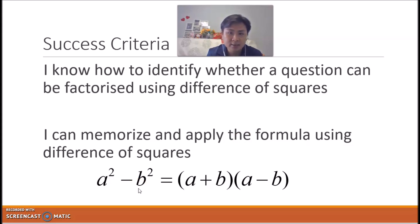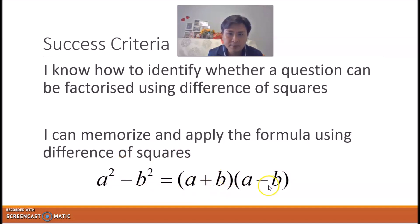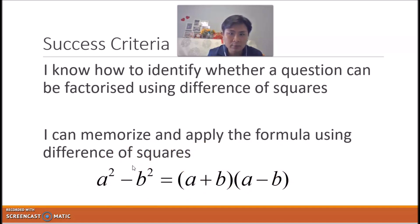It is very essential that you memorize this formula: a squared minus b squared equals (a + b)(a − b). We will go through later what all these things mean, but it's very important that you memorize this formula and know how to apply it so that we can apply difference of squares successfully.